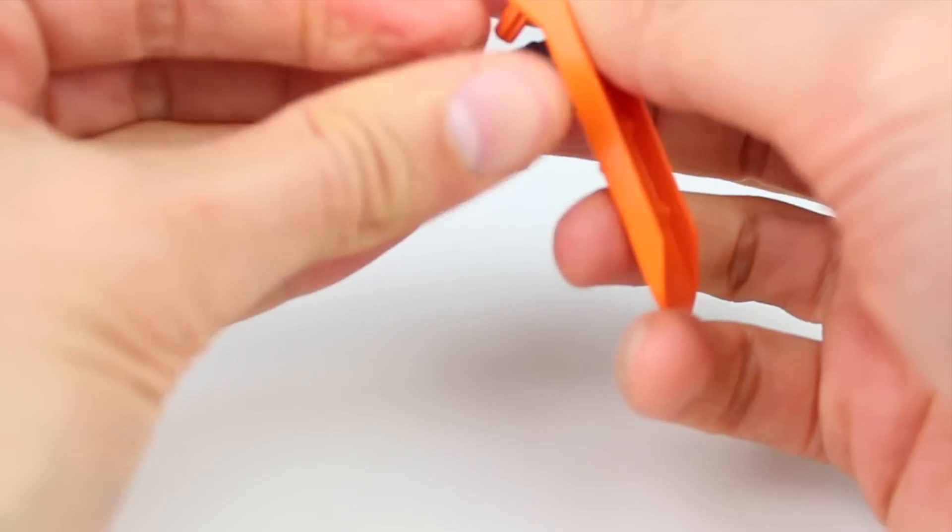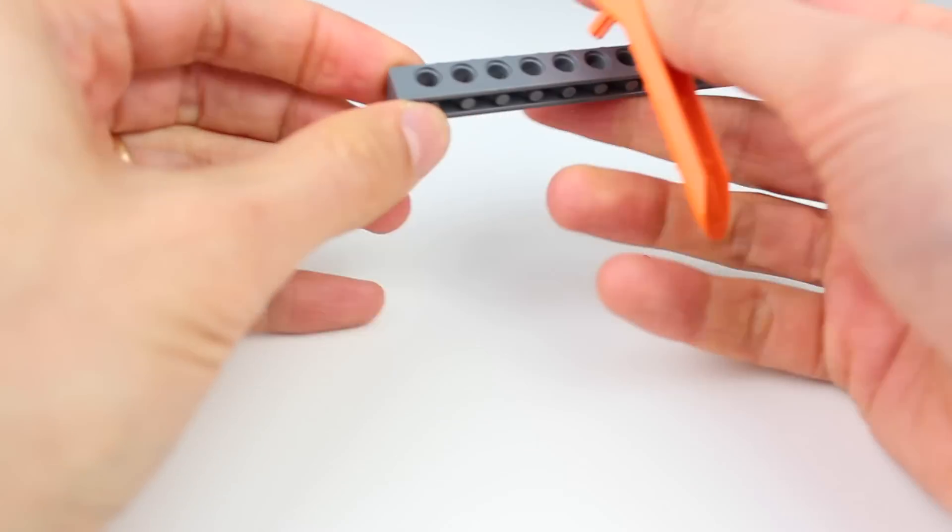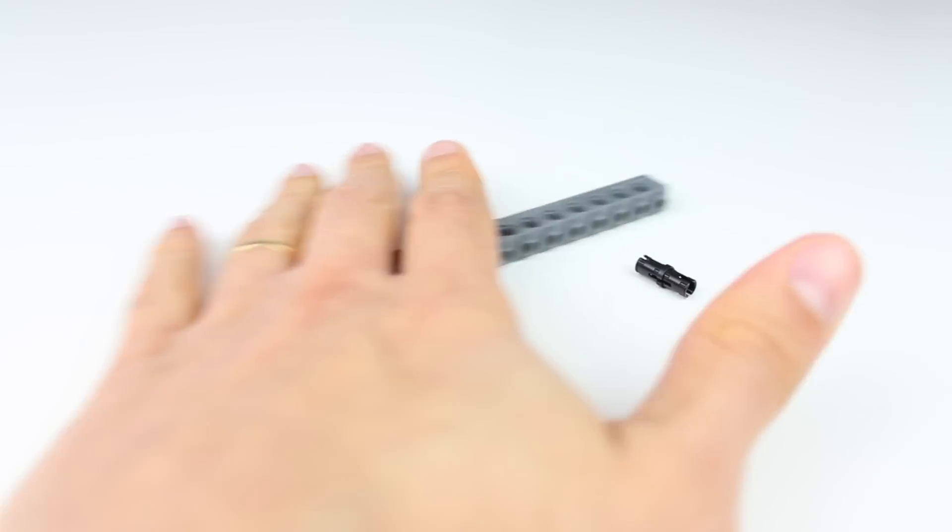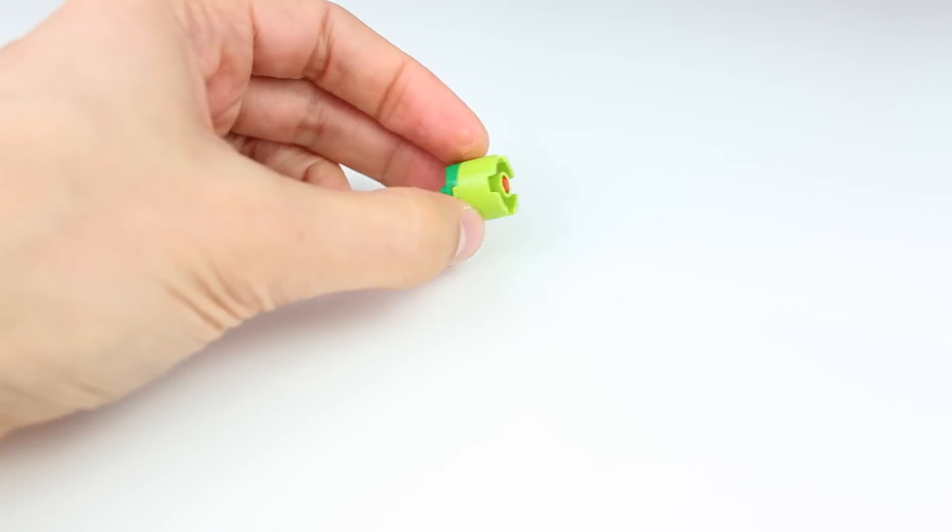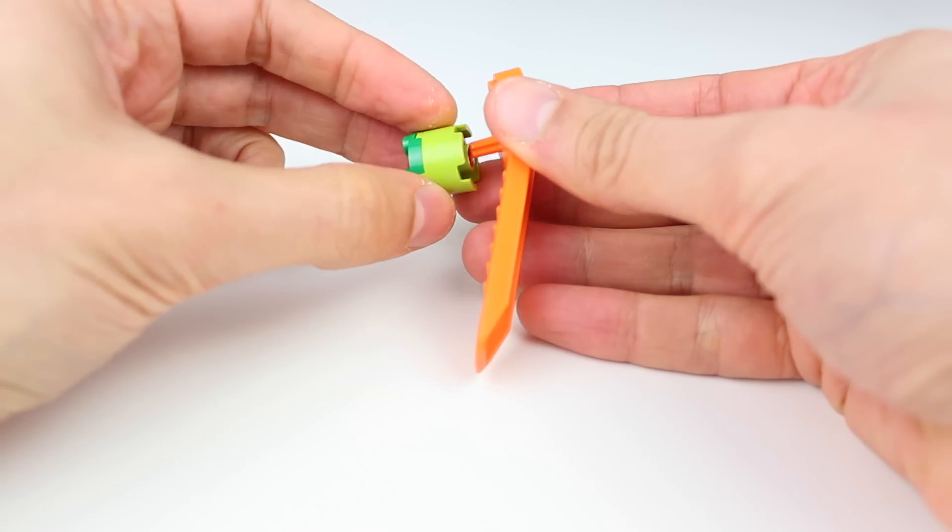You're not really using the Pin Remover for the last one, right? You can just pull it out. Okay, whatever. You can also use it to remove axles from assemblies, just like this one.